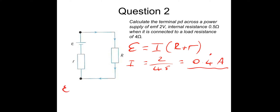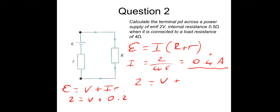Now using EMF equals V plus Ir: 2 equals V plus 0.4 recurring times 0.5. Half of 0.4 recurring is 0.2 recurring. Therefore V equals 2 minus 0.2 recurring, which gives a terminal PD of 1.78 volts.